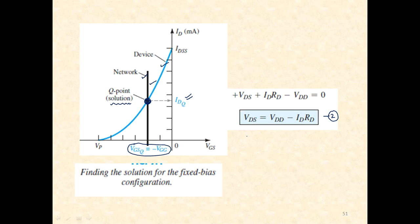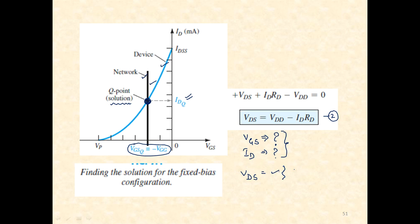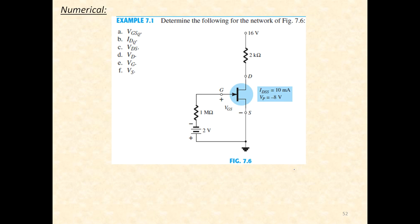To summarize the approach for any configuration: after solving the input loop, determine the expression for the controlling parameter, which for JFET is the voltage VGS. Once VGS is found, determine the expression for the drain current ID. Then solve the output loop to determine VDS. These three steps are common for any configuration.